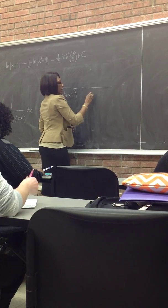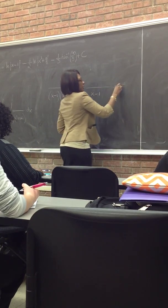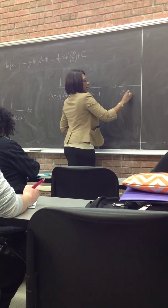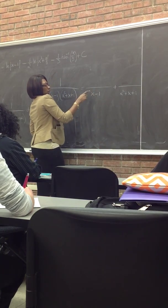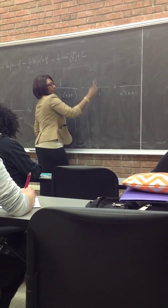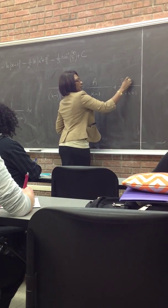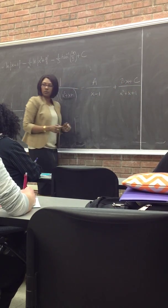When I decompose, I have two fractions. One of x minus 1 and the other one x squared plus x plus 1. So what do I have on top for each one? This one? A. And this one? Bx plus C. Because that's a plus.